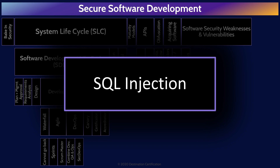SQL injection is where malicious SQL code is inserted into a form field on a website, sent to the web application, and then the web application passes the malicious SQL code onto the database — essentially allowing the attacker to directly control a database that they should have no ability to control. The major way to prevent SQL injection is to perform input validation. The web application should never allow SQL code from a user to be passed directly to the database. Input validation is also how we protect against cross-site scripting.